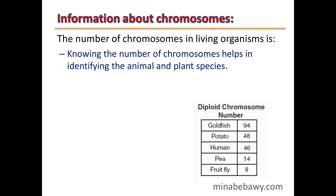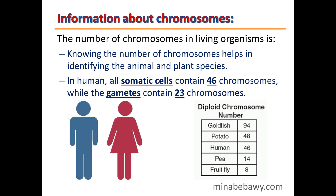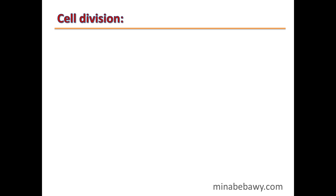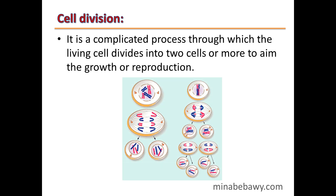Knowing the number of chromosomes helps in identifying animal and plant species. In humans, all somatic cells contain 46 chromosomes, while gametes contain 23 chromosomes. Cell division is a complicated process through which a living cell divides into two or more cells to achieve growth or reproduction.